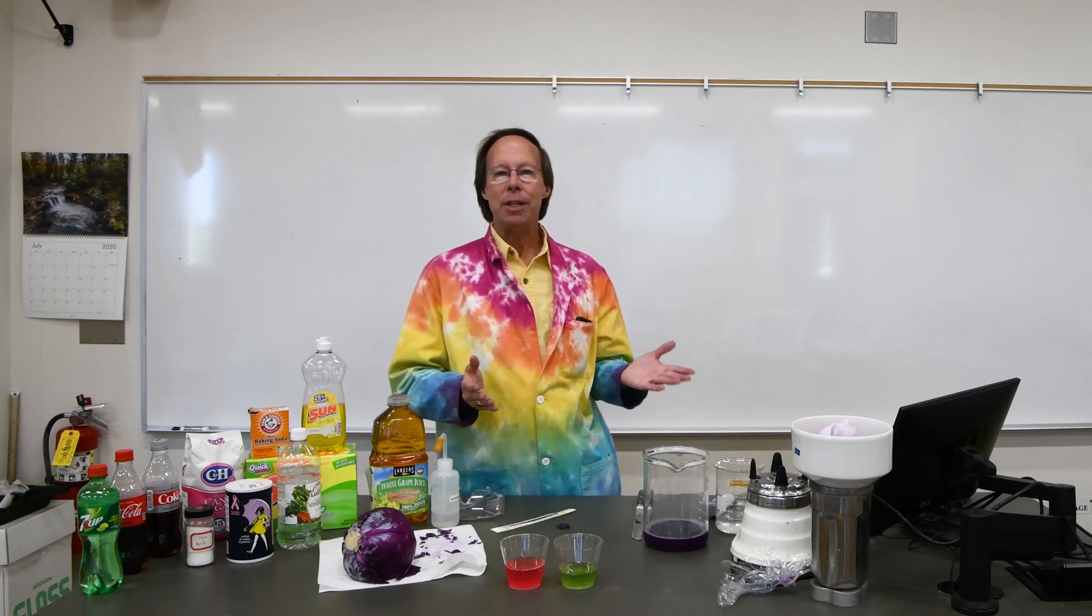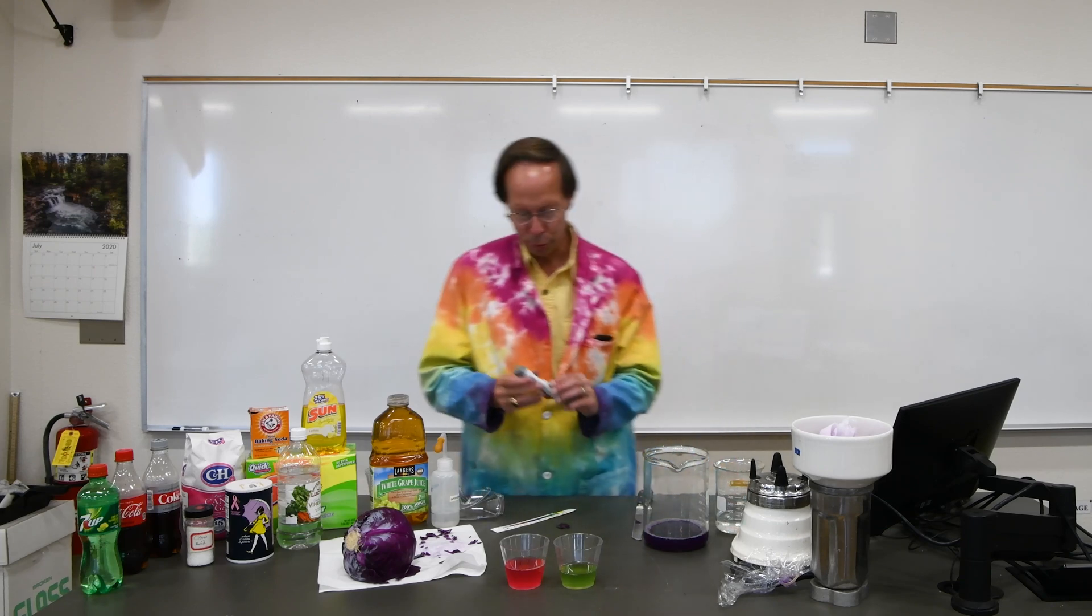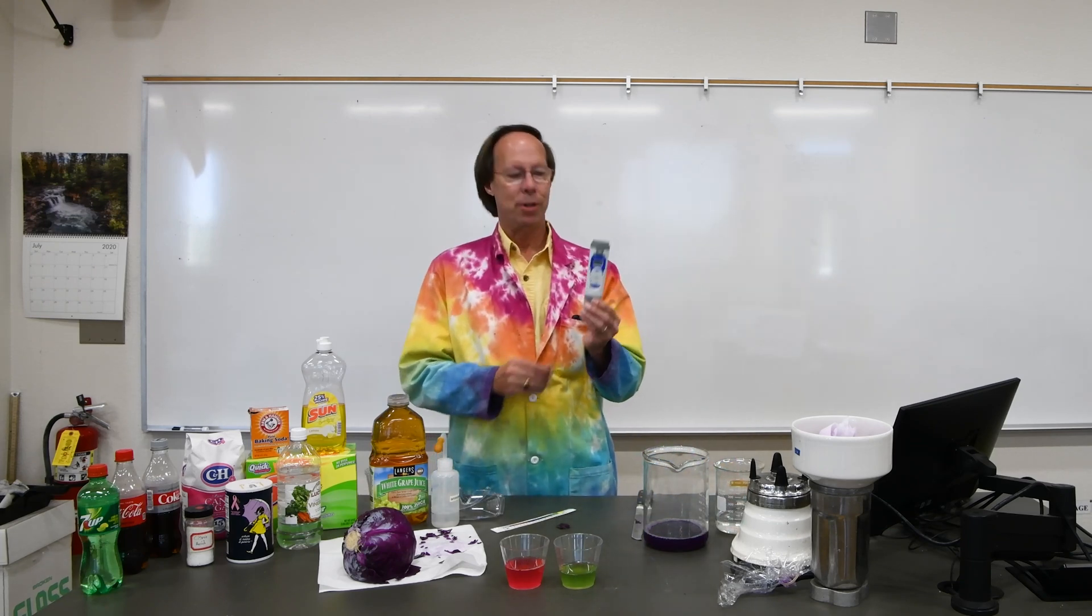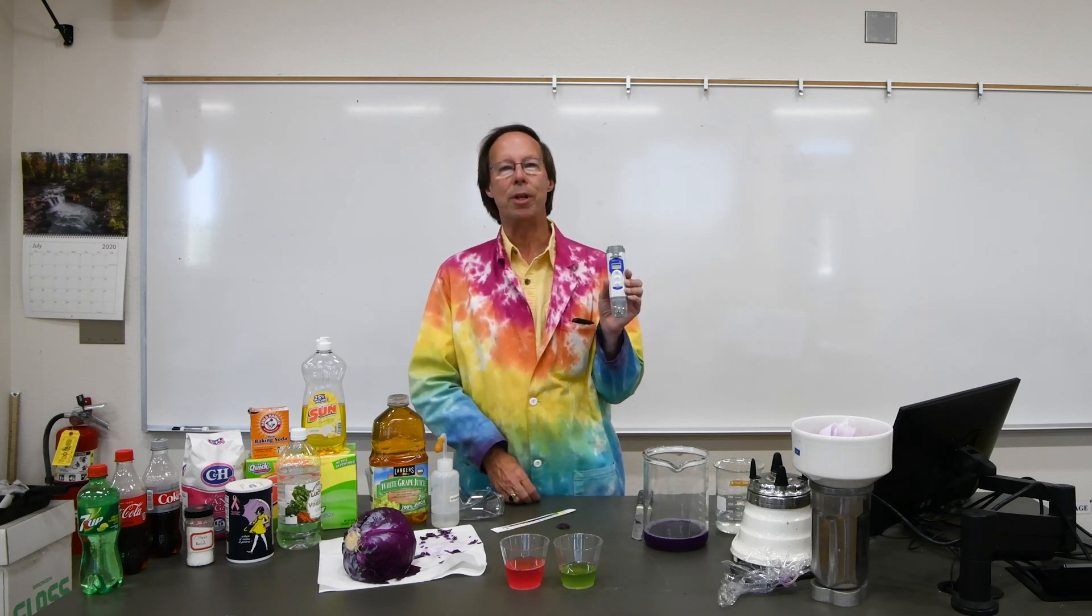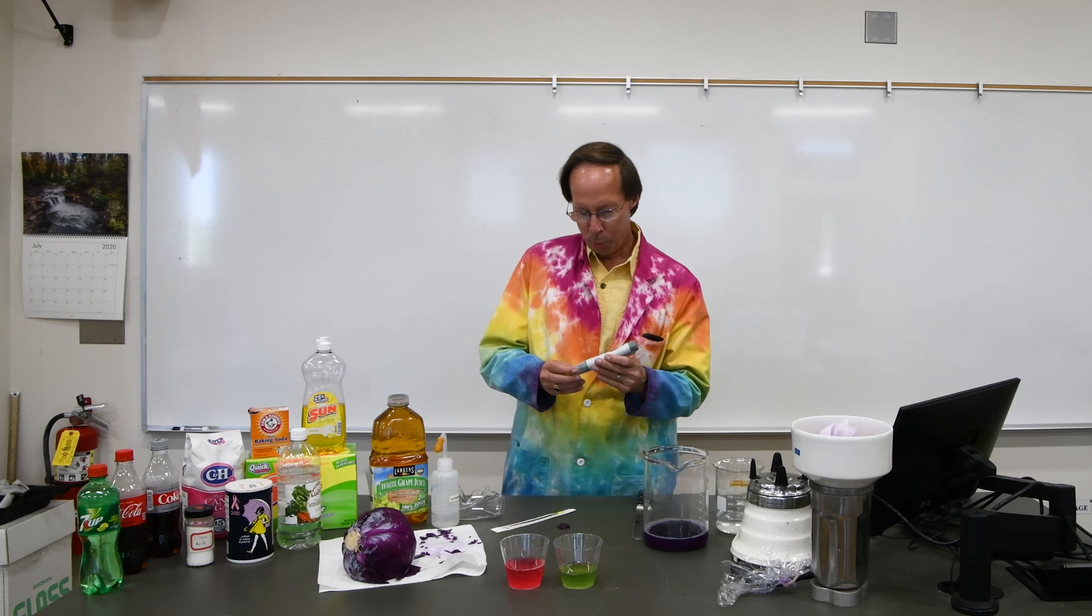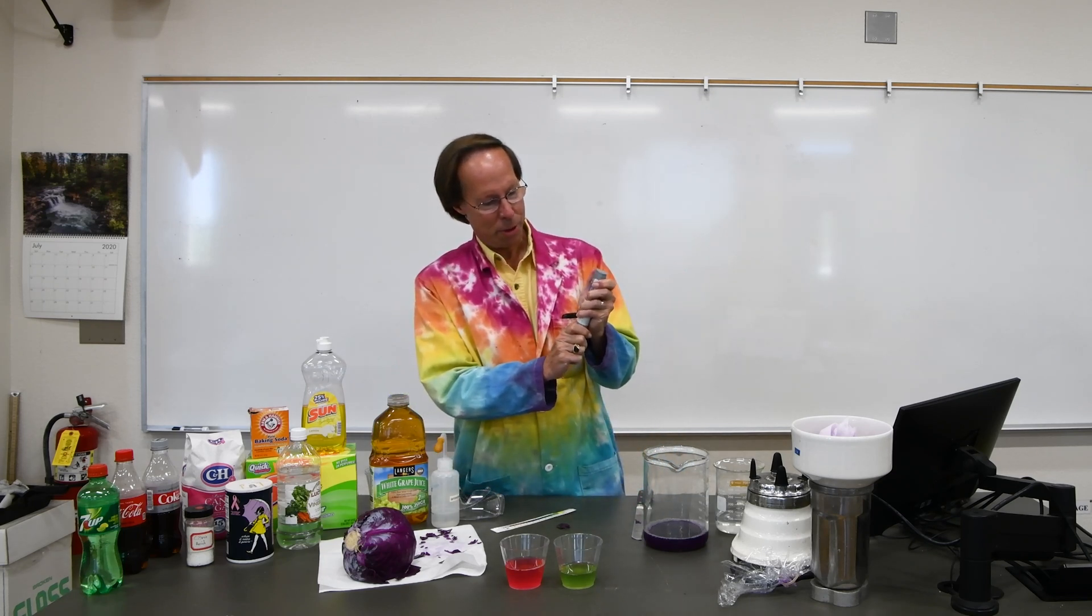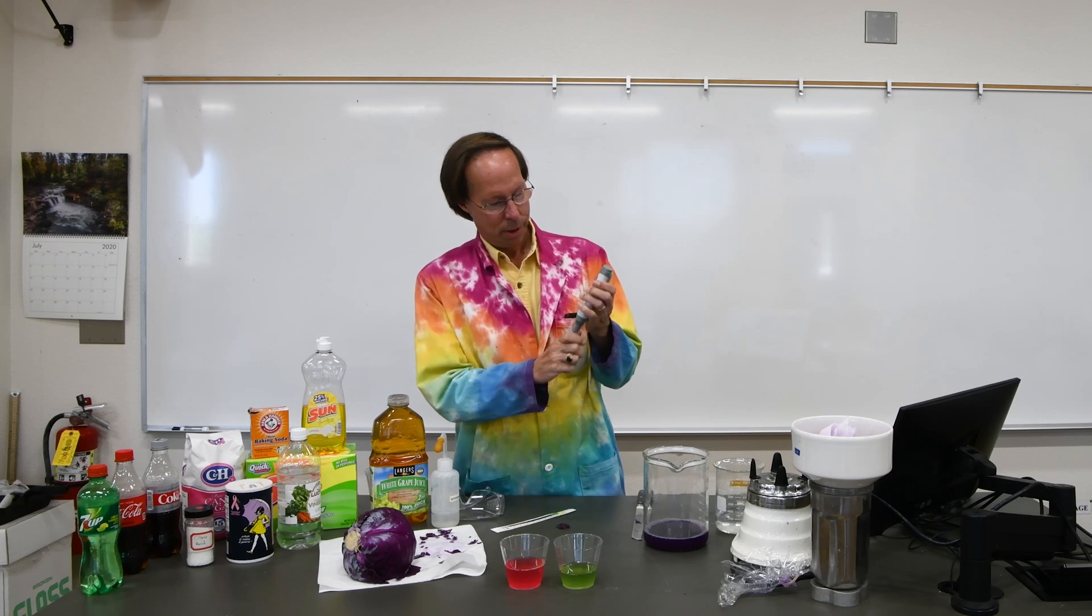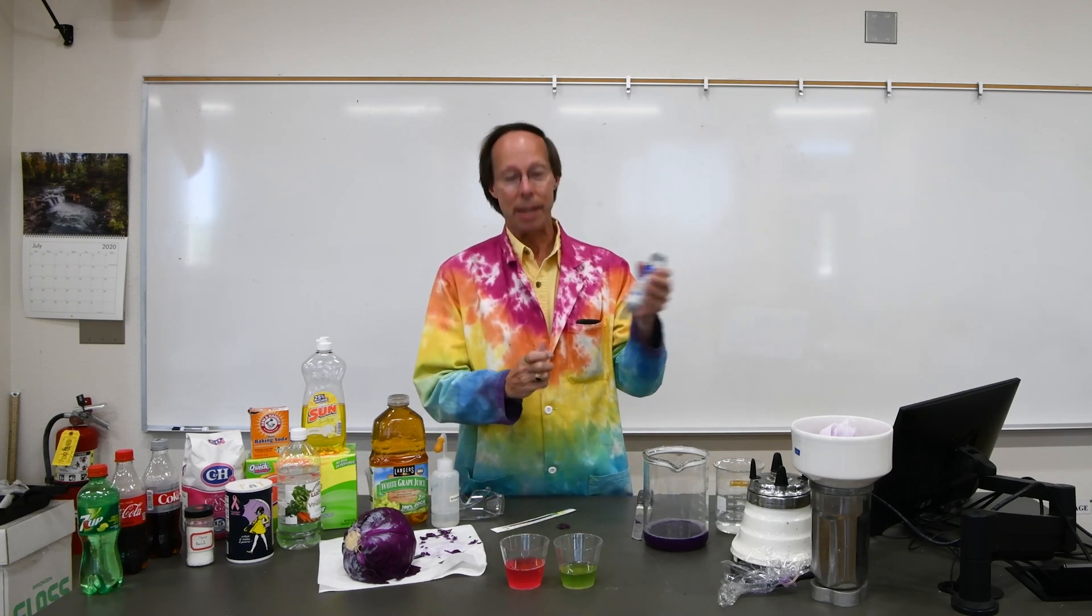After we finish with the 10 cabbage juice tests, we're going to go ahead and test five samples using a pH meter. This pH meter is very accurate. It'll read out to the nearest tenth of a pH unit very easily. And all we have to do is simply take off the cover on the pH meter and immerse the pH meter into our solution and it will simply read out the pH.